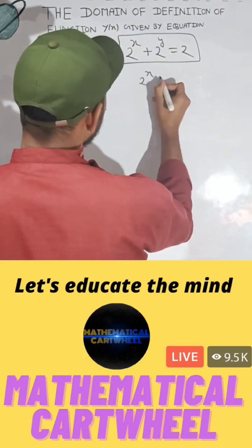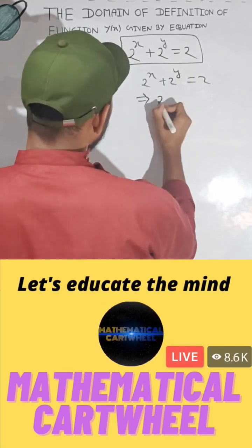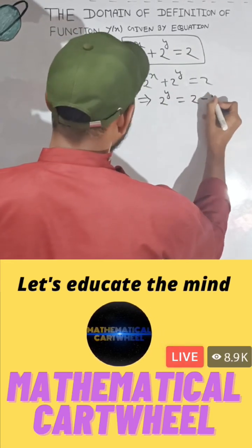So you can simply write 2 to power x plus 2 to power y equal to 2. If you continue the process, you can easily write 2 to power y equal to 2 minus 2 to the power x.